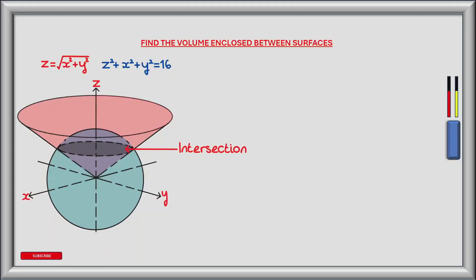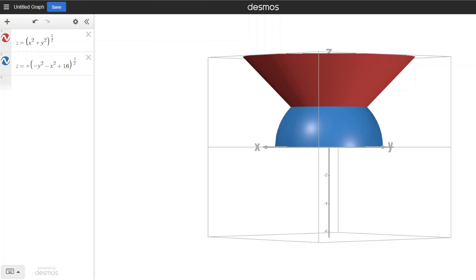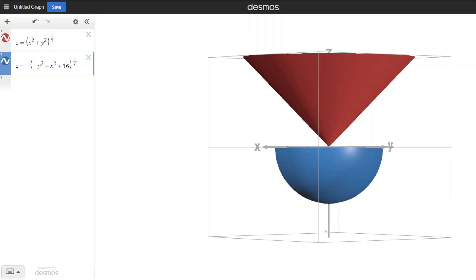Our first step in calculating the volume enclosed between the two surfaces is to determine the region of intersection and then to convert this region to polar coordinates. To find this region we need to equate one equation to the other. Looking at the equation of the sphere, z squared equals 16 minus x squared minus y squared, so z equals plus or minus the square root of 16 minus x squared minus y squared. Together with the cone, the positive square root is above the xy plane, so we'll use the positive square root as the enclosed volume is above the xy plane.